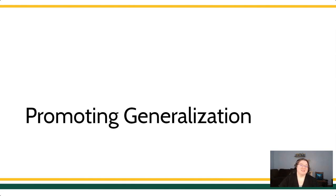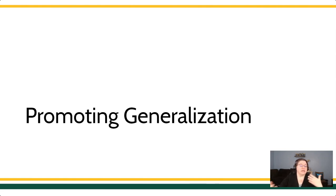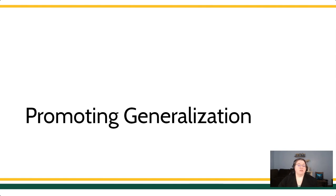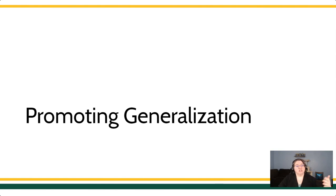Welcome back, it's Veronica Howard. Last time we were talking about what is generalization. We talked about generalization training, discrimination training, and the purposes of each. We talked about what a stimulus class is and how you know whether a stimulus falls into a class. And we finished up by talking about a generalization gradient — a visual representation of generalization in the presence of novel stimuli.